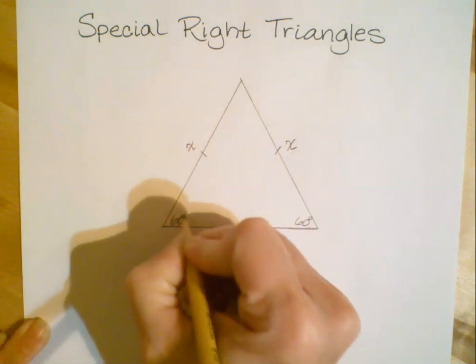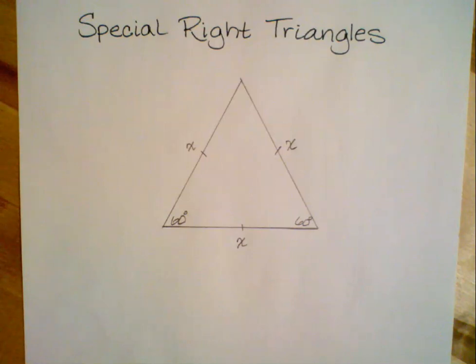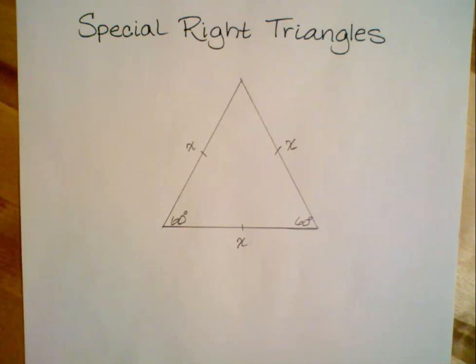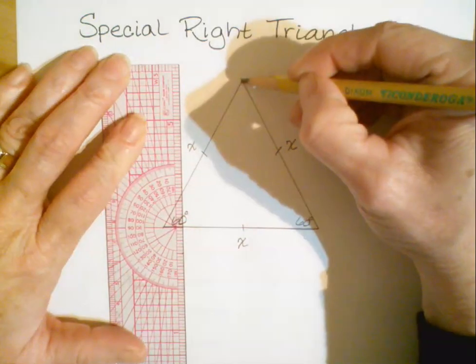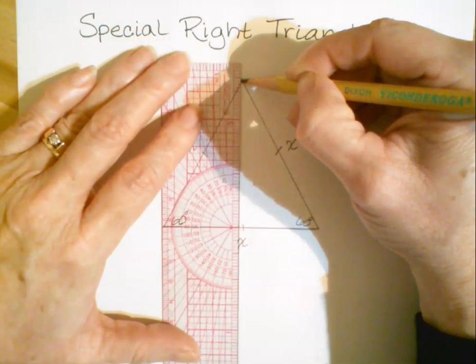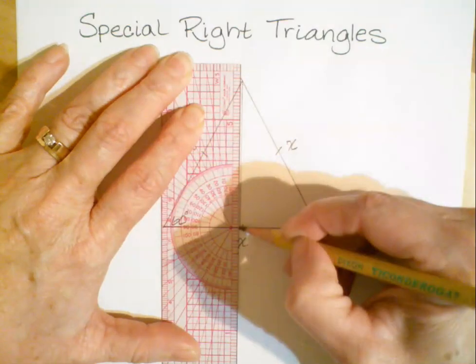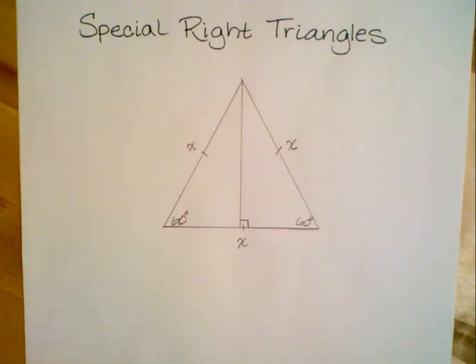With the case of the square for the 45-45-90 triangle, we were able to divide the square in half using one of its diagonals. In this case, the equilateral triangle doesn't have any diagonals, but we can still effectively divide it in half by drawing one altitude. Remember an altitude is any segment from a vertex perpendicular to the opposite side, and it's going to intersect the opposite side at a right angle.